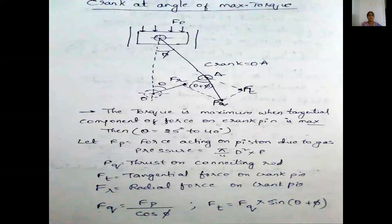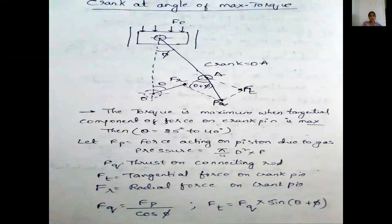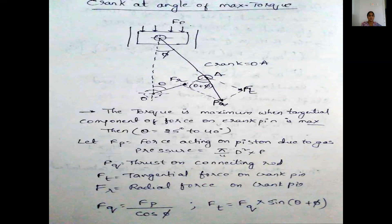This is the crankshaft at maximum torque. The maximum torque is applied in this direction. We consider the crankshaft at maximum torque, calculating where the Fp positions are — Fp is the force on the piston — which is directly connected to the connecting rod and then considered through different positions of the shaft pin. This is called the crank at maximum torque.